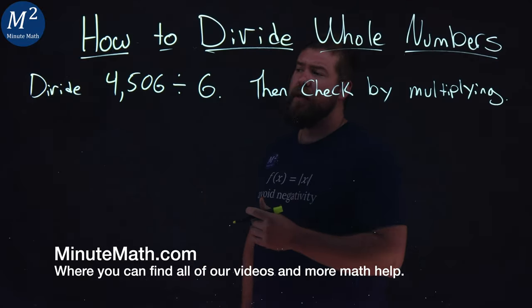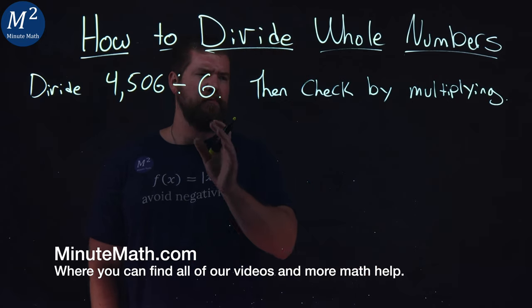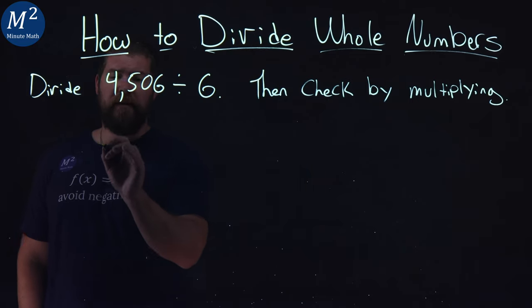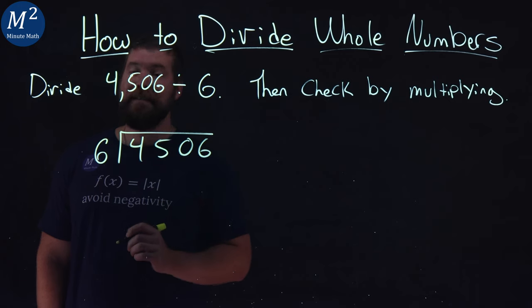We're given this problem right here: 4,506 divided by 6. We're going to divide that and then check by multiplying. So let's set up our long division. I'm going to take the 6 right here, and does it go into 4,506?